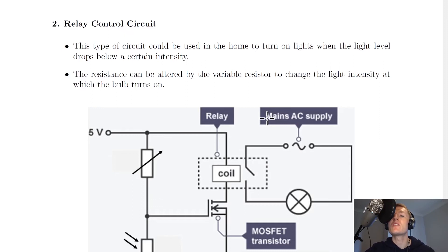A second example of where you might see relay switches is in a relay control circuit. So it says this type of circuit could be used in the home to turn on lights when the light level drops below a certain intensity. The resistance can be altered by the variable resistor to change the light intensity at which the bulb turns on. So remember we've seen in a previous video the purpose of the variable resistor in a control circuit—and it's to allow you to control the conditions at which something switches on or off.